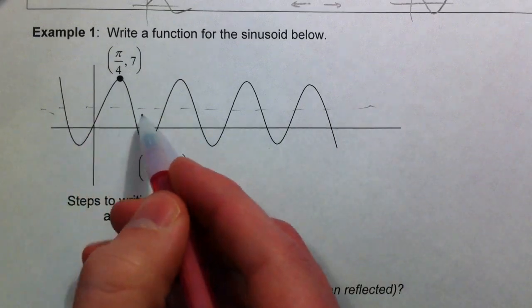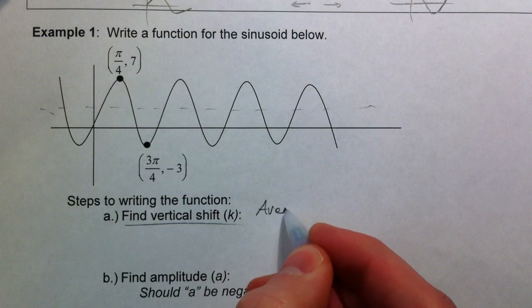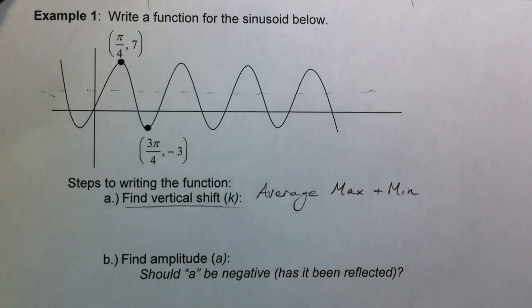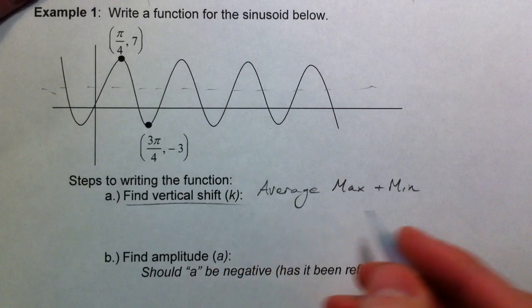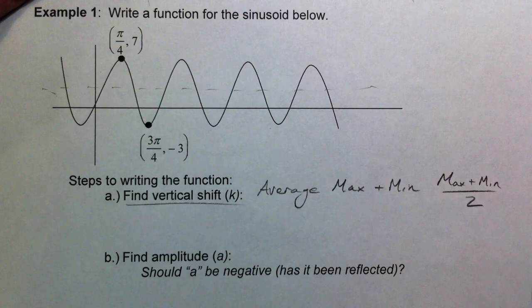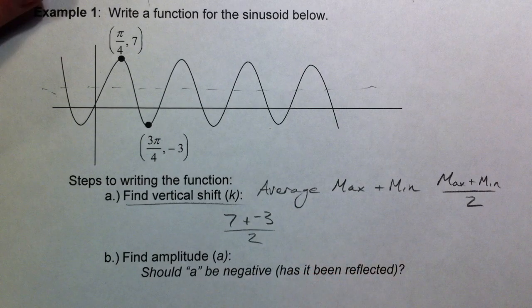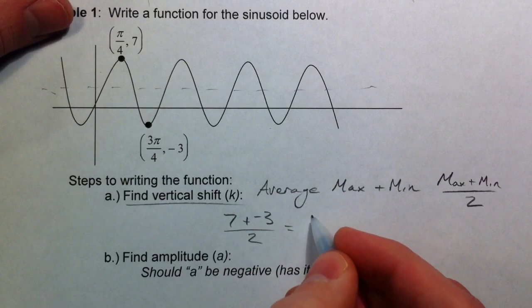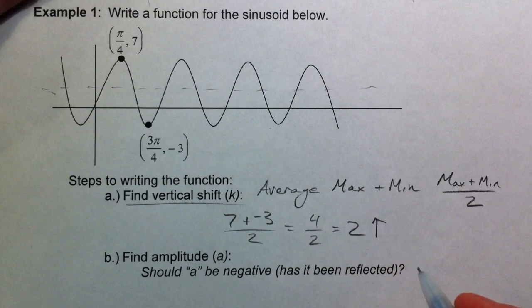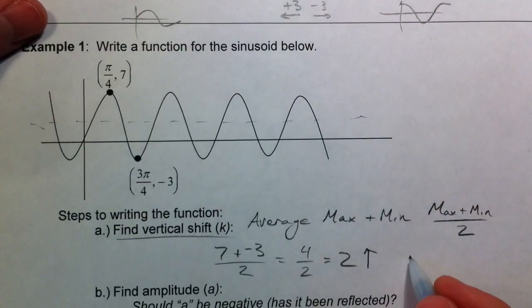It's not centered at zero, so what is it centered around and how can we find it? What it's centered around is right in the middle of the max and min values. To find it, average the max and the min because it's right in the middle. So we do max plus min divided by two — that's seven plus negative three divided by two, which is four divided by two, equals two. So the vertical shift is up two; that's our k term.